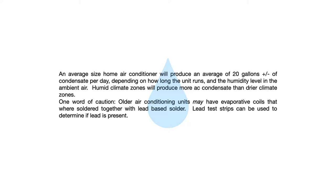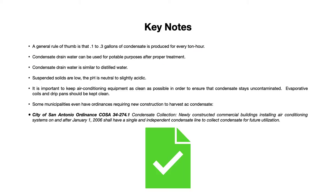One word of caution: older air conditioning units may have evaporative coils that were soldered together with lead-based solder. There are lead test strip kits you can buy to test the solder joints on your coils. There are even some designed to test water, so you can test the condensate drain water coming out of your air conditioning unit to see if it contains lead or not.